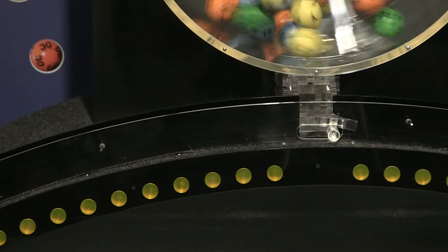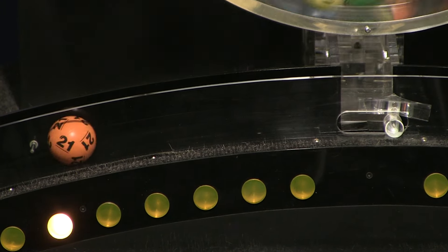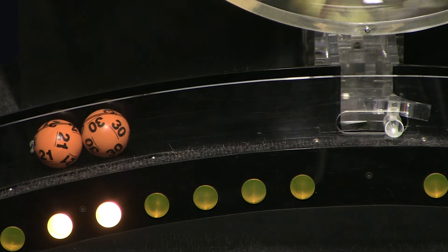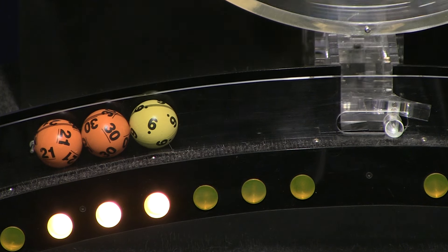Tonight's Mass Cash drawing. Our first number up is number 21, and following that is number 30. And here comes number 6.